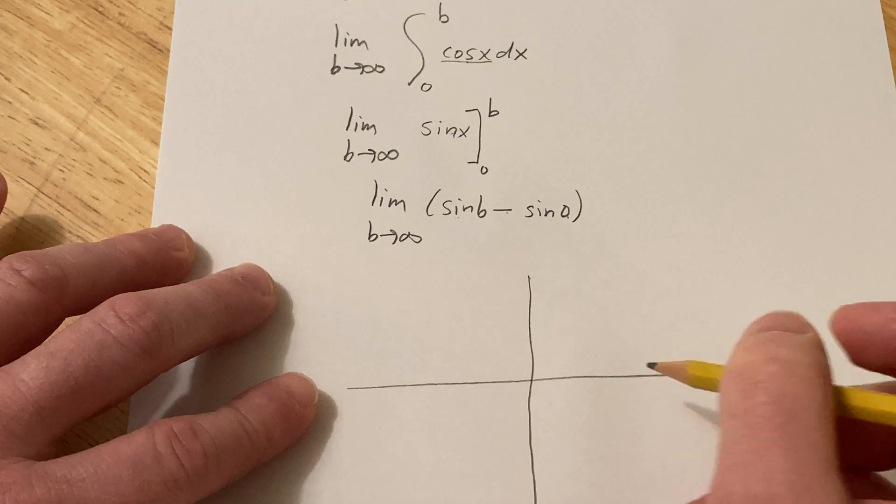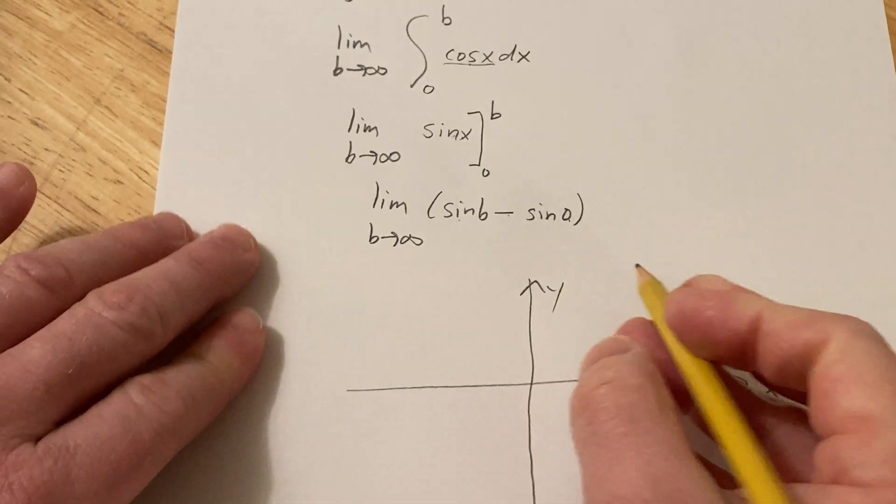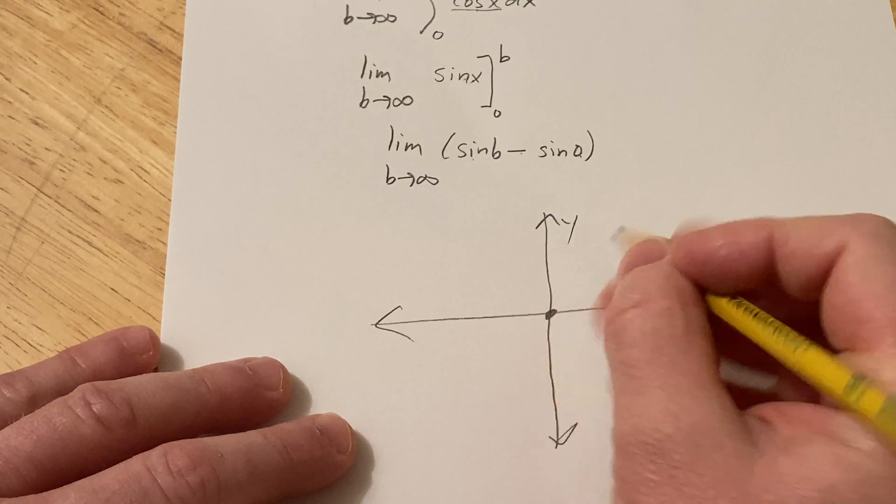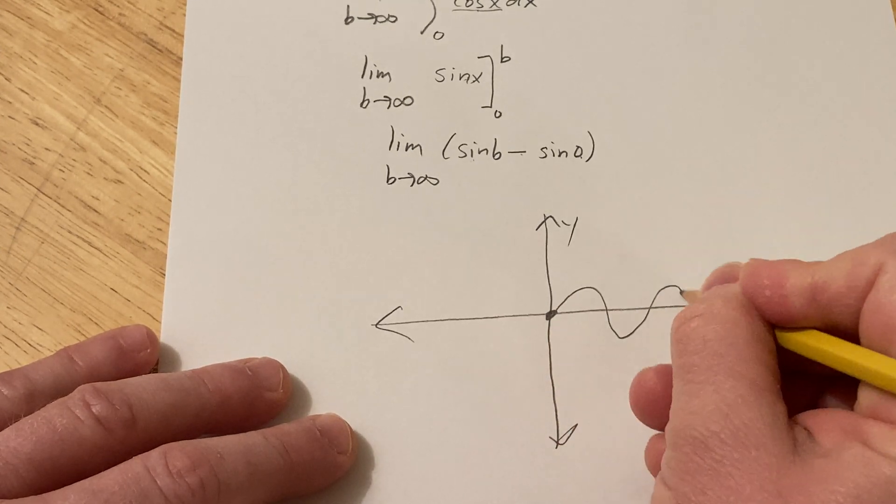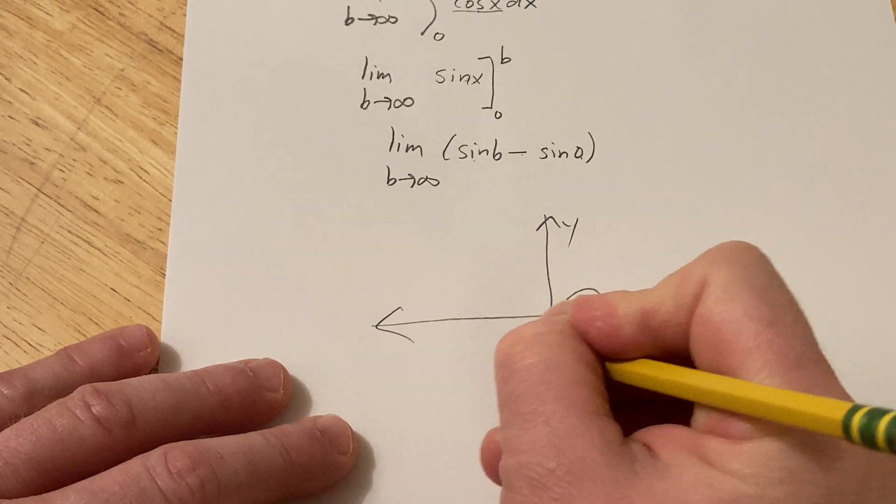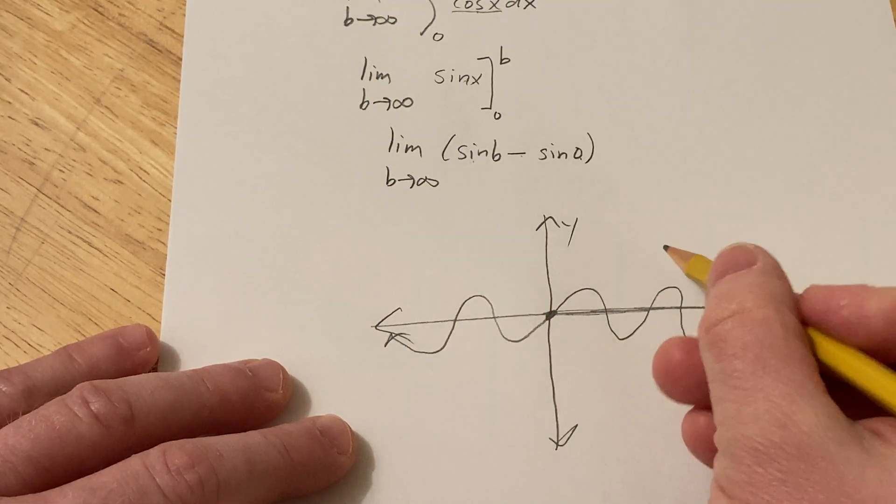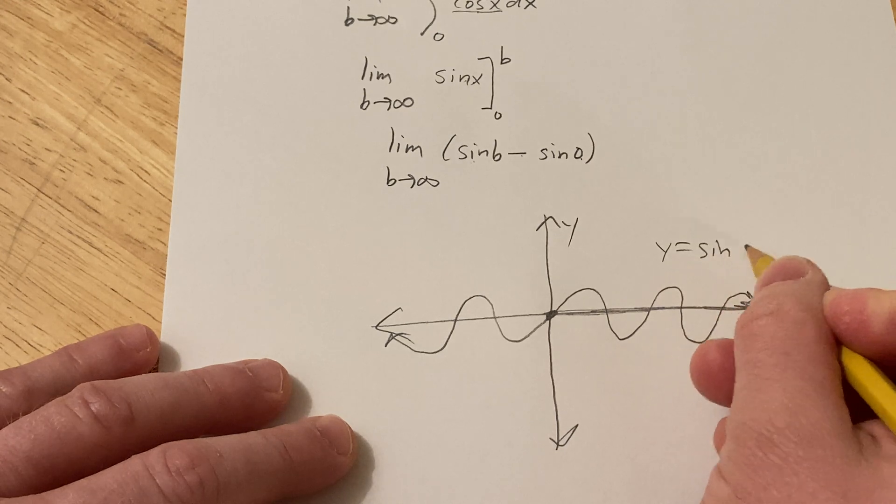So let's do a graph. So here's x, here's y. And sine of zero is zero. And then it does this. It goes on forever. Right? So as B approaches infinity, the sine function, this is the graph of y equals sine x, just oscillates between 1 and negative 1.